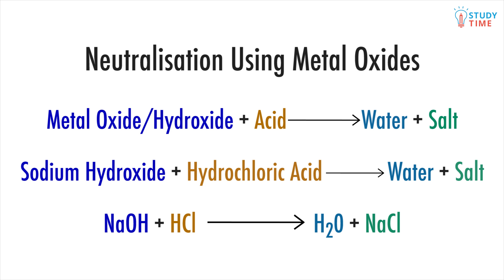If we add a metal oxide or metal hydroxide base to an acid, we get just water and a salt. So if we add the acid HCl to the base NaOH, we end up with water and sodium chloride, which is table salt.